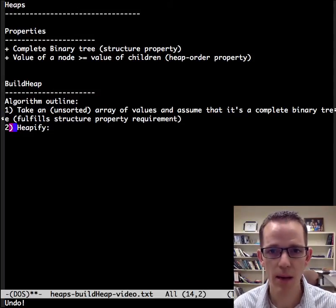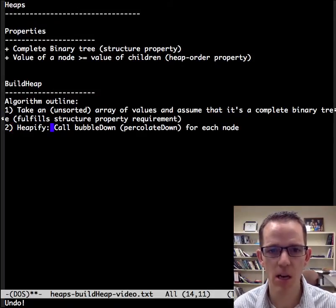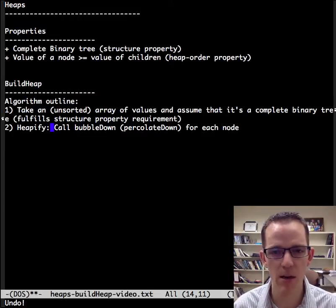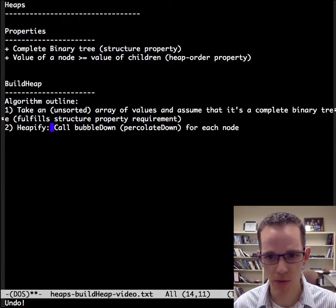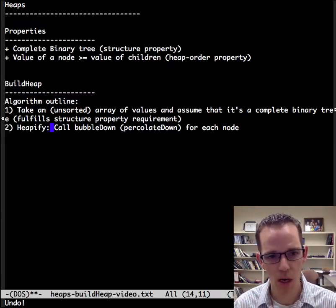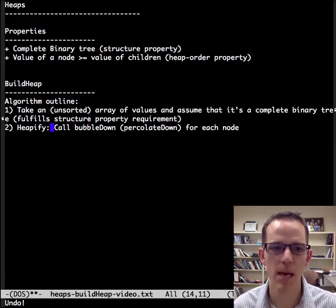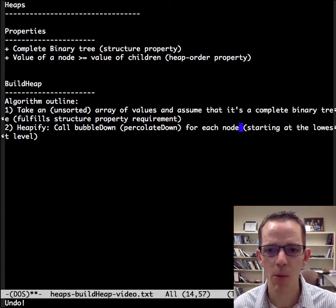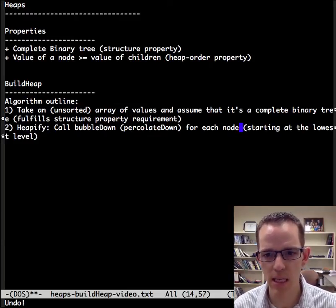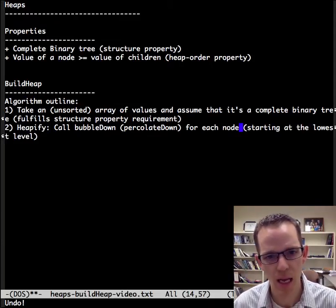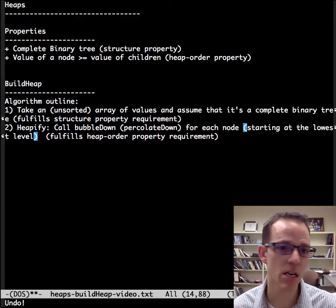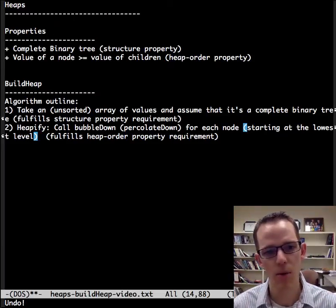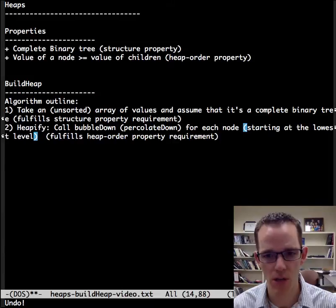So what is heapify? So the way heapify works is it calls bubble down, or percolate down in other texts, for each node. So for each node, we're going to call bubble down to make it a heap. And we're going to start at the lowest level, and go through each node. If we do this then, it's going to fulfill the heap order property, because it will make sure that the relationships between the parents and the children are all set.